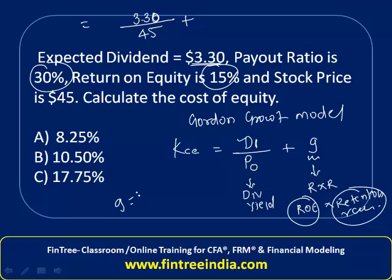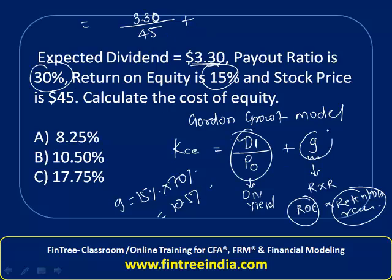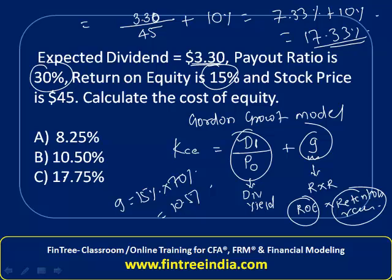The dividend payout ratio is 30%, which means the retention rate is 70%. So G = 15% × 70% = 10.5%. Therefore, cost of equity = 3.30 / 45 + 10.5% = 7.33% + 10% ≈ 17.33%. The closest answer is option C.